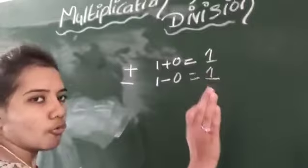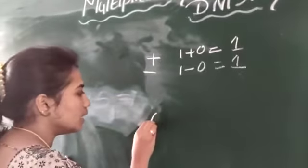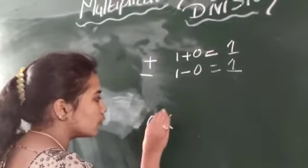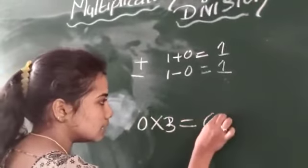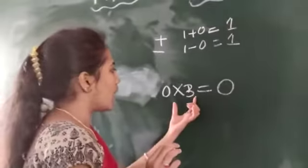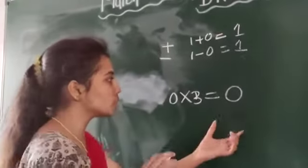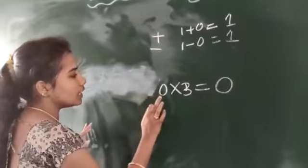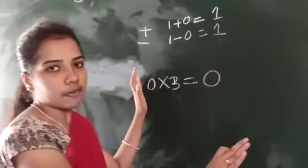But in multiplication, if any number is multiplied with 0, the answer is 0 itself. It will not multiply any number. It comes 0 only. Remember this first. Once again, if any number is multiplied with 0, the answer is 0 itself.